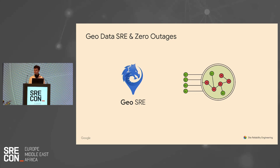That's a pretty crazy goal to achieve, and a lot of people gawk at that. In 2020 alone, we were responsible for nine major serving outages impacting end users. And a subset of those major outages were due to risky dependencies that we were actually unaware of.